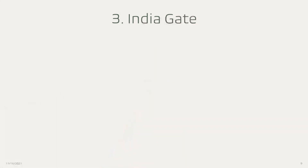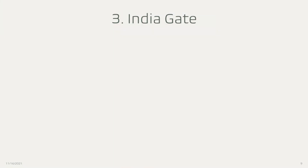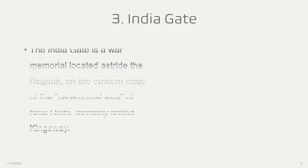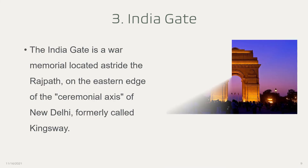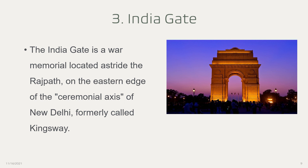Now let's learn about India Gate, which is a symbol of India. The India Gate is a war memorial located astride the Rajpath on the eastern edge of the ceremonial axis of New Delhi, formerly called King's Way.